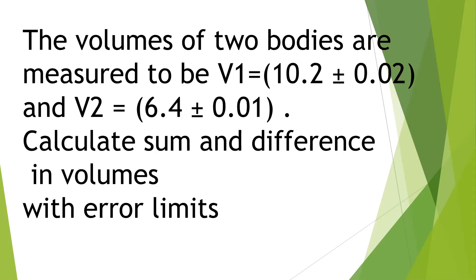So the answers are: V1 plus V2 equals 16.6 plus or minus 0.03, and V1 minus V2 equals 3.8 plus or minus 0.03. When two values are added or subtracted, their magnitudes depend on the situation, but errors are always added whether it is sum or difference.